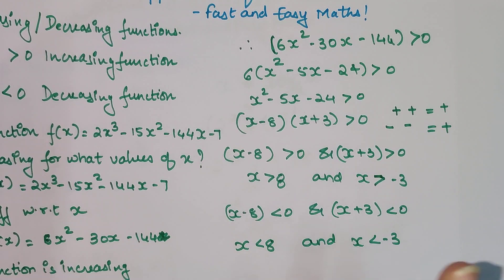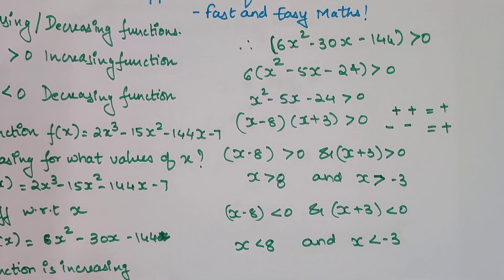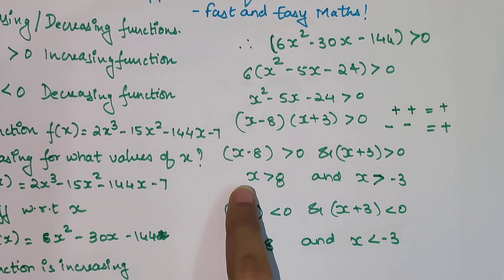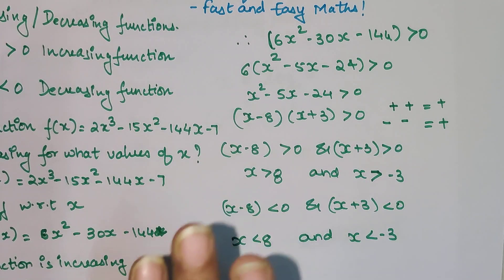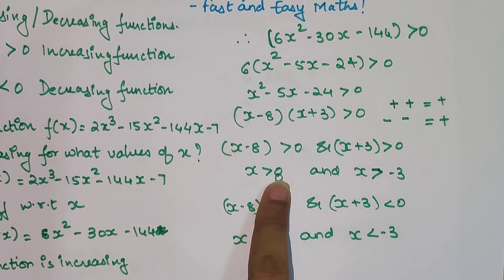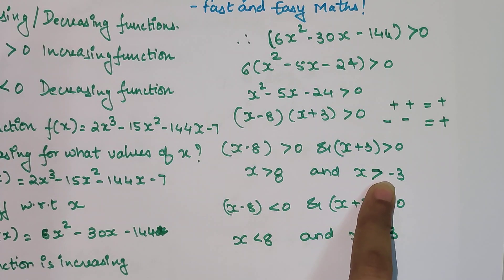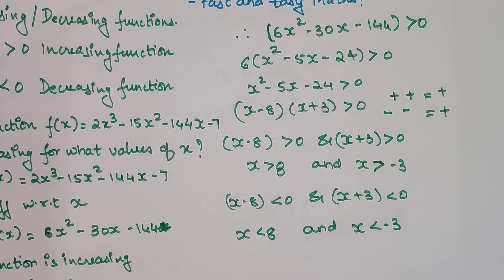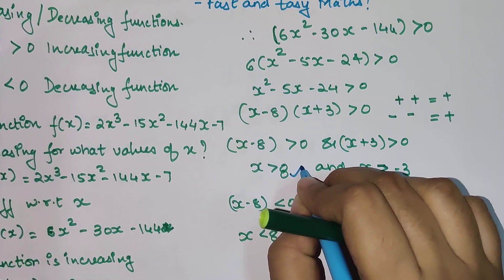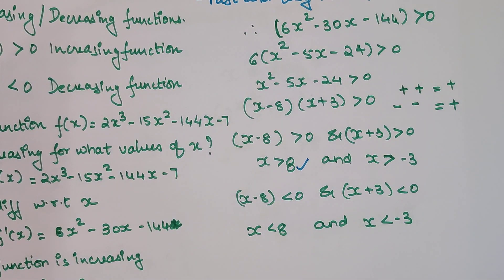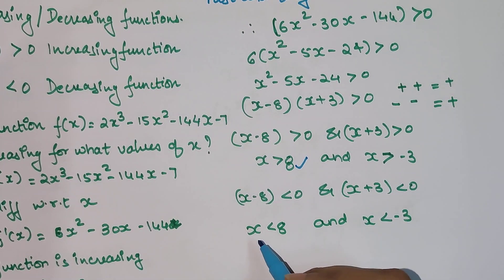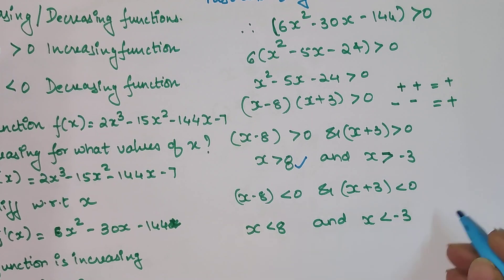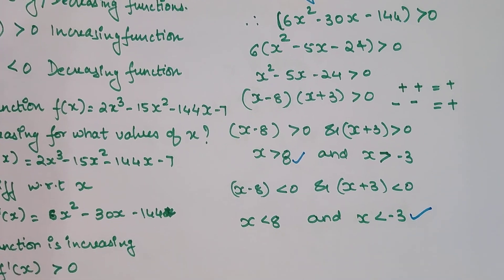This is where most students make a mistake — what values do you pick? You should pick the value in such a way that the next condition is already satisfied. If x > 8, by default it will be greater than -3. So we pick x > 8 from the first scenario. Similarly, if x < -3, it will automatically be less than 8. So we pick x < -3 from the second scenario.